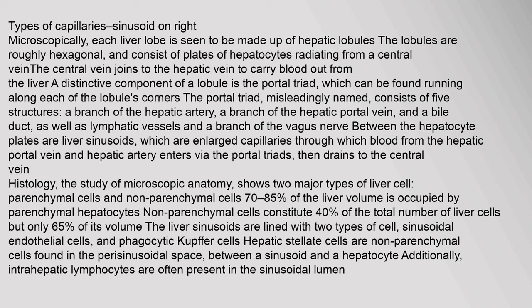Histology shows two major types of liver cells: parenchymal cells and non-parenchymal cells. 70 to 85 percent of the liver volume is occupied by parenchymal hepatocytes. The liver sinusoids are lined with sinusoidal endothelial cells and phagocytic Kupffer cells. Hepatic stellate cells are non-parenchymal cells found in the parasinusoidal space between a sinusoid and a hepatocyte.